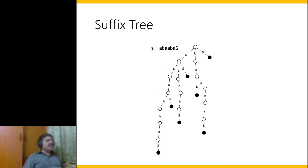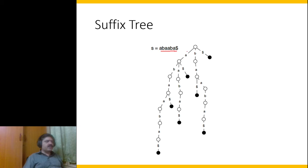Let me first explain what a suffix tree is and how to construct one. Assume a string s is given: a, b, a, b, a — and we use a dollar sign as an end marker. So we add a dollar to all given strings. Once the string is appended with a dollar, we are ready to construct a tree. We take all the suffixes of this string. The first suffix is just dollar, so we create a root node and add dollar to it, putting a dark node to mark the end.